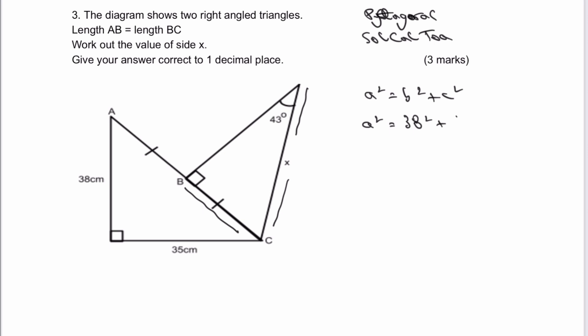So 38² + 35². When I work that out, A² = 2,669. If I then do the square root, A = 51.6623.